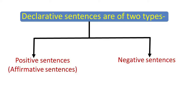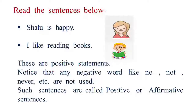Declarative sentences are of two types: positive and negative. Positive sentences are also called affirmative sentences. Look at the following sentences and repeat them after me: Shalu is happy. I like reading books. These are positive sentences because they are conveying positive meaning.